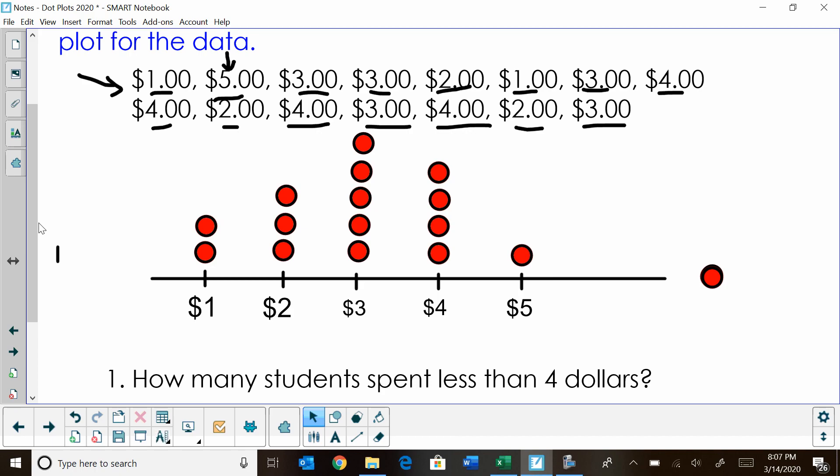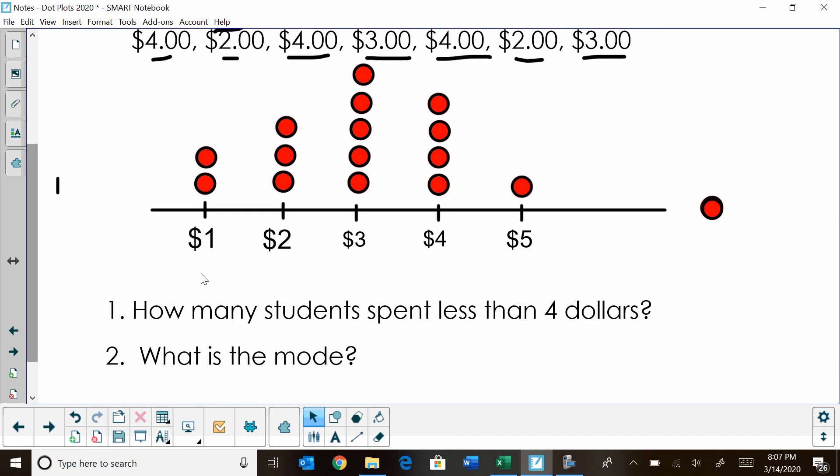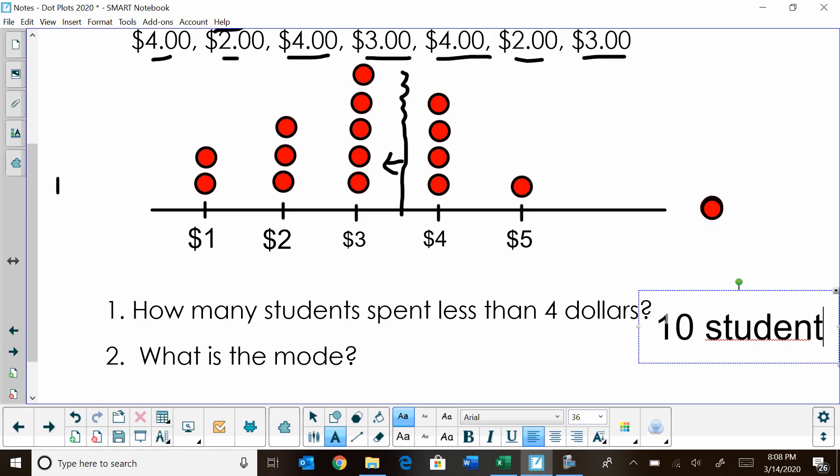So now we can answer some questions about the dot plot we just created. How many students spent less than $4? I'm going to draw a little line. Here is less than everything to the left of $4. How many students spent less than $4? We have 1, 2, 3, 4, 5, 6, 7, 8, 9, 10. So the answer would be 10 students spent less than $4.